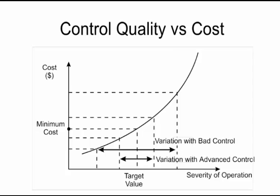By having a type of bad control, you can see that the initial cost for a bad control is lower compared to an advanced control. But if you look at the final cost, you can see that the final cost of a bad control could be much higher compared to an advanced control technique. And the variation of cost between a good control and a bad control — so it's a matter of trade-off between cost and quality control.